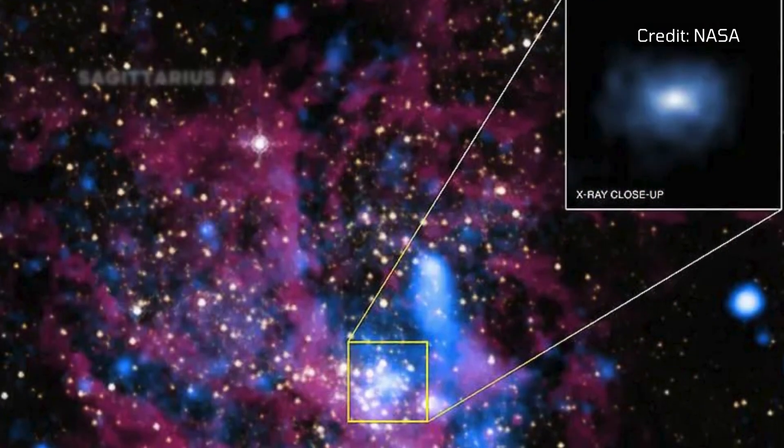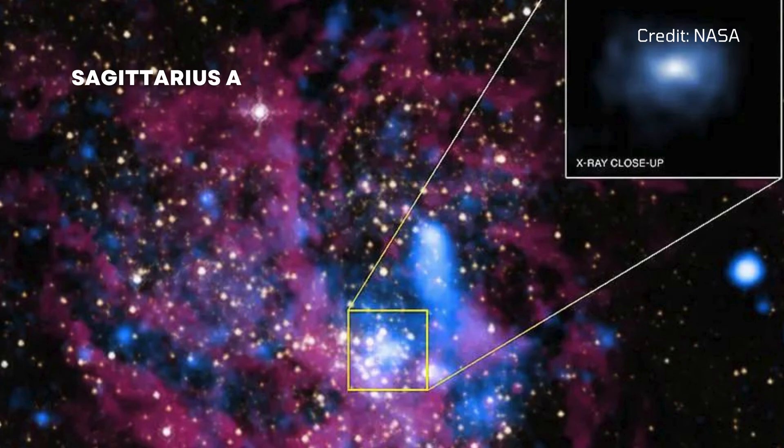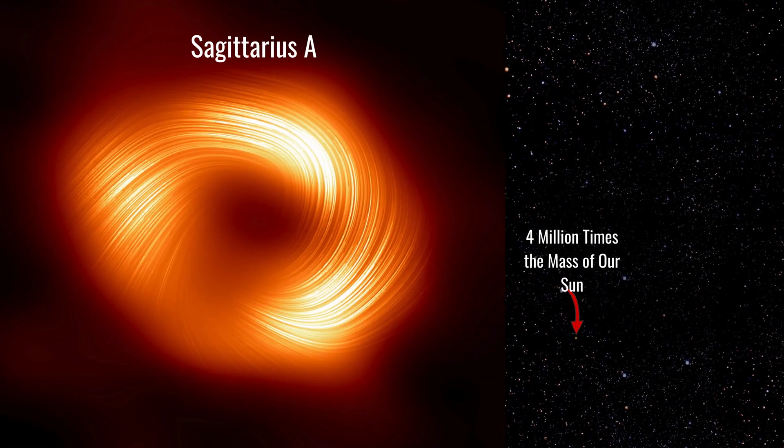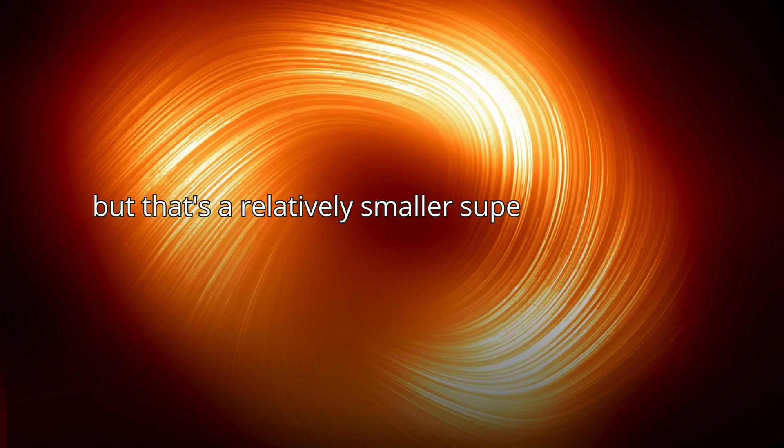In the center of our Milky Way galaxy lies Sagittarius A, which is a supermassive black hole. It's about 4 million times the mass of our Sun, but that's a relatively smaller supermassive black hole.